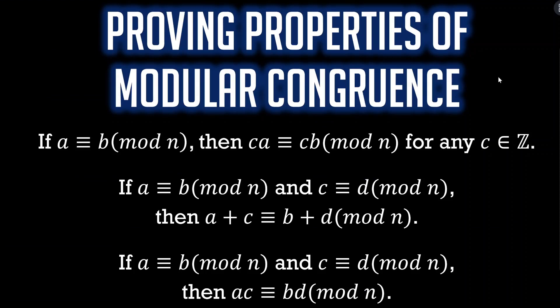There are three statements on the screen right here — these are the three statements we're going to prove in this video. I definitely encourage pausing the video, reading these statements, trying to make some sense of them. These are all three conditional statements that can be proven using the direct proof method.